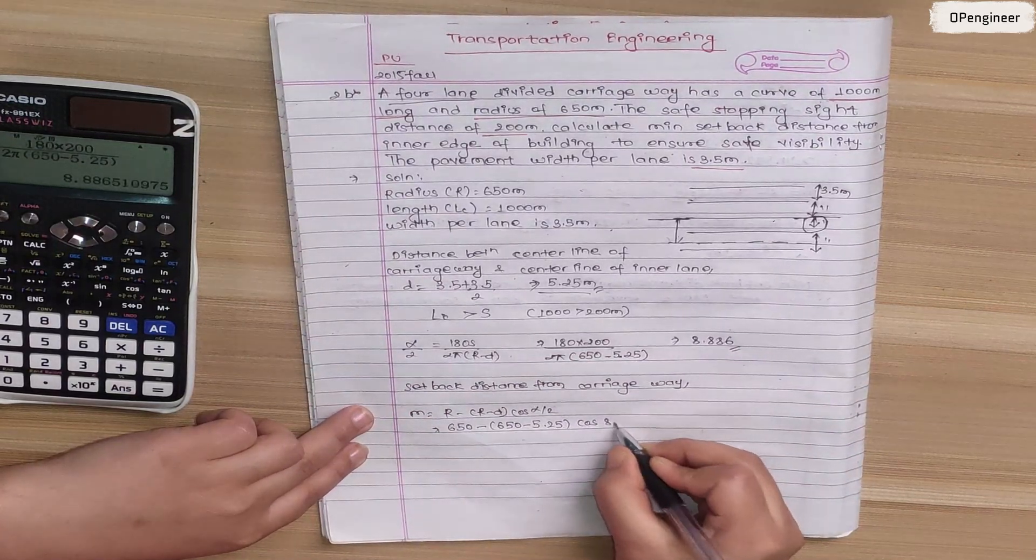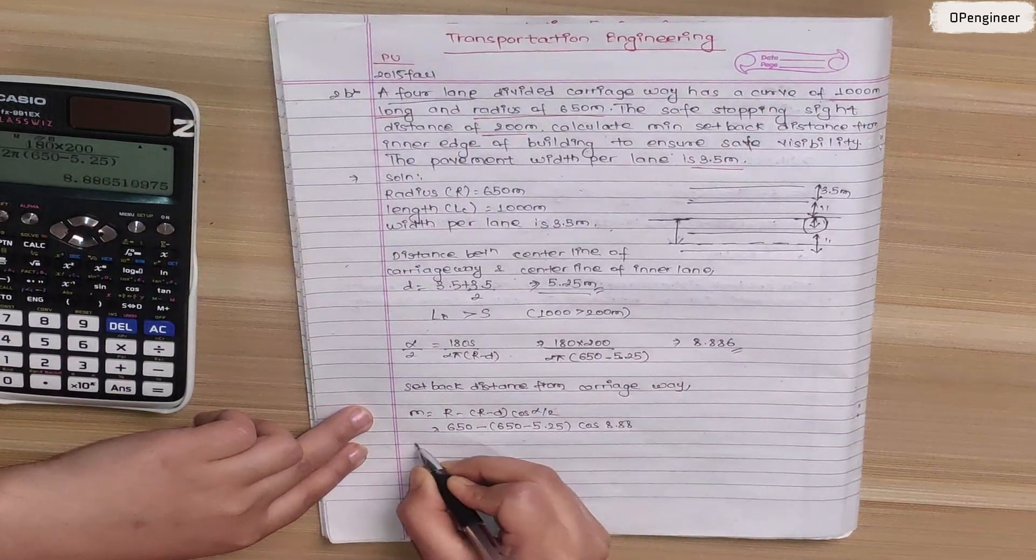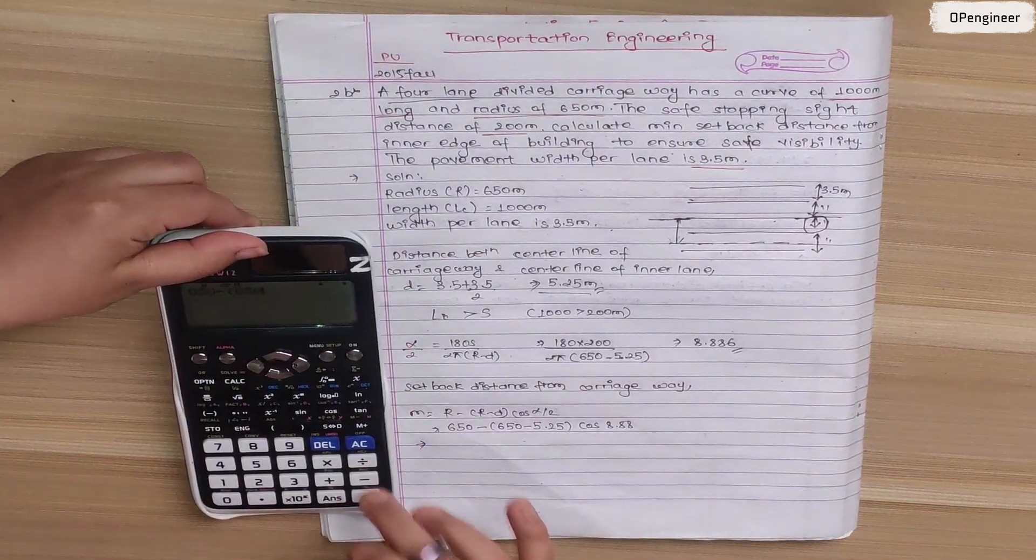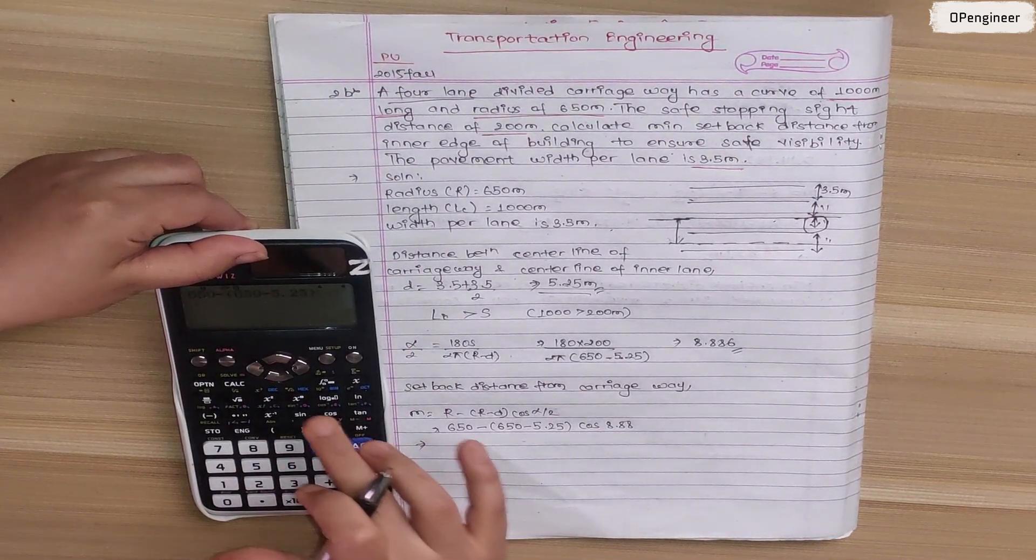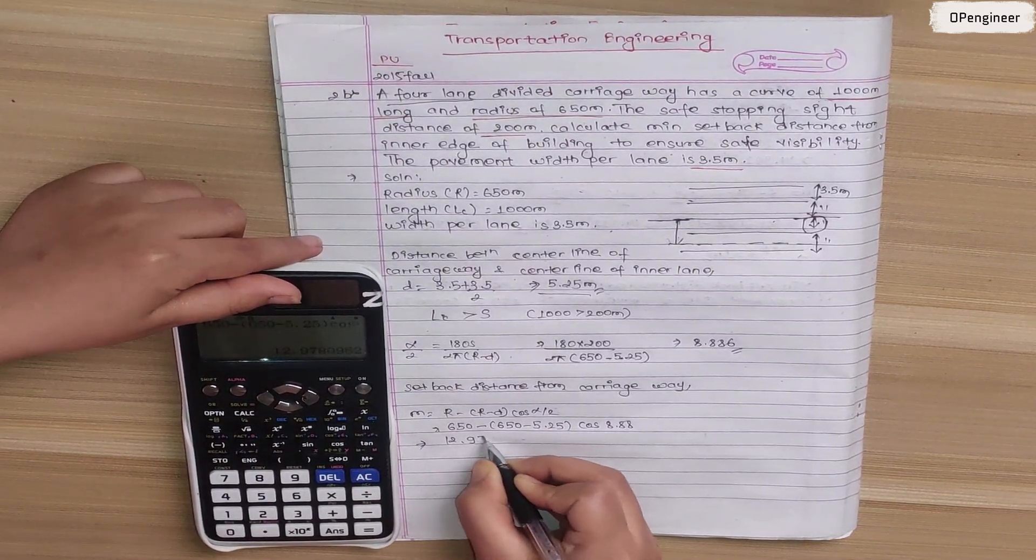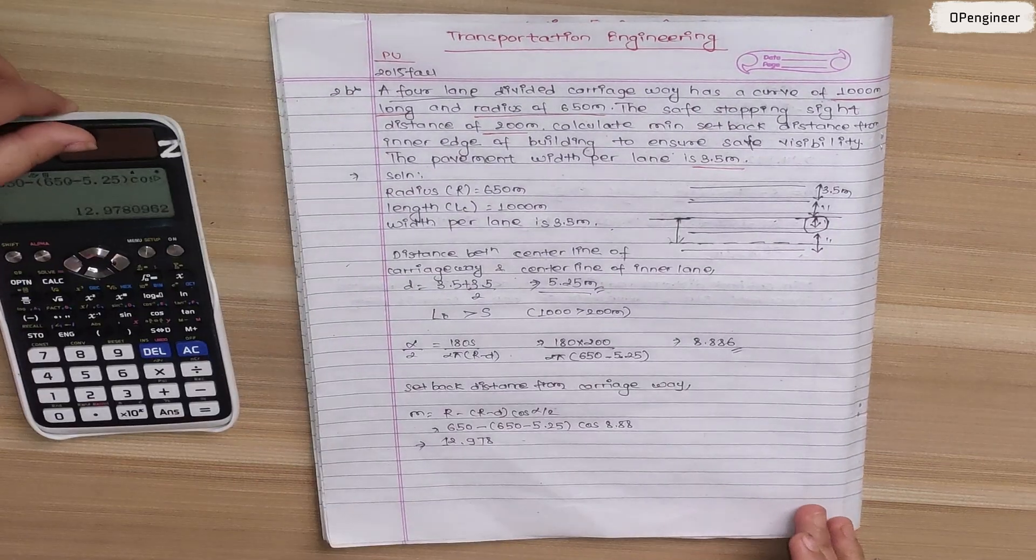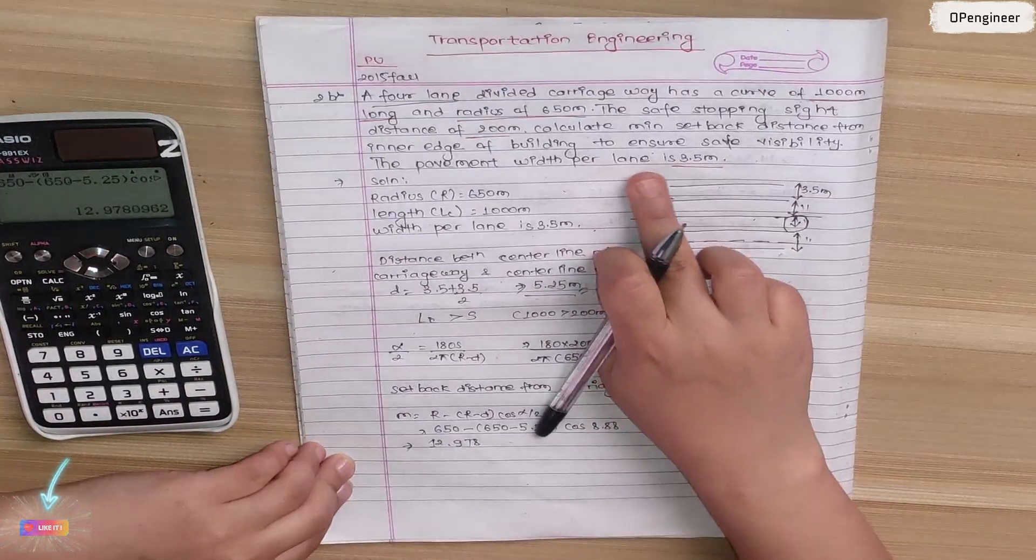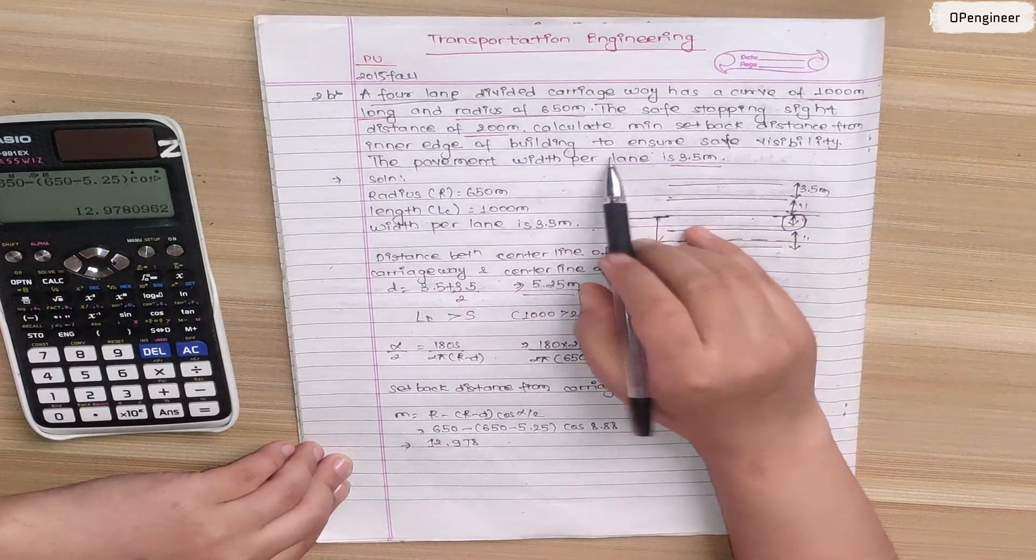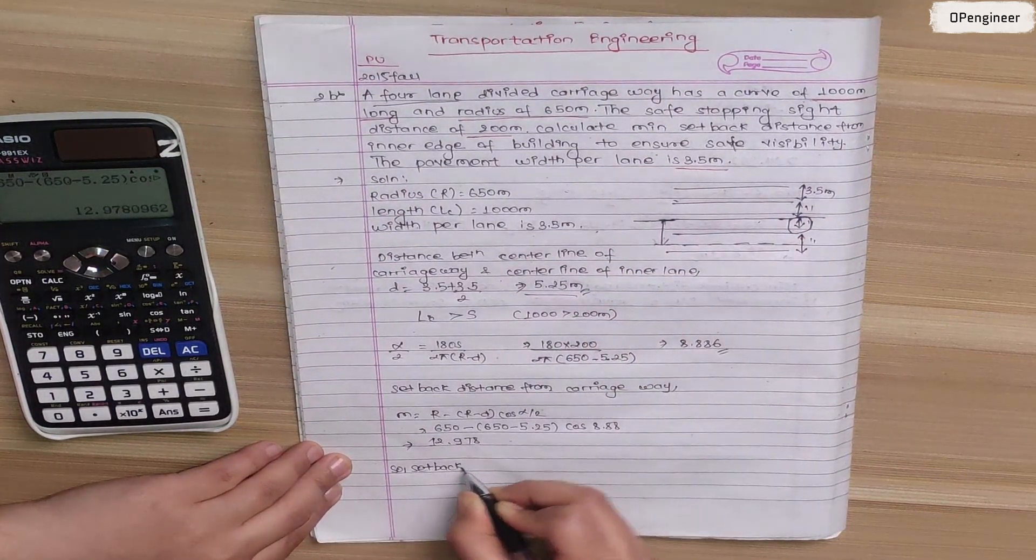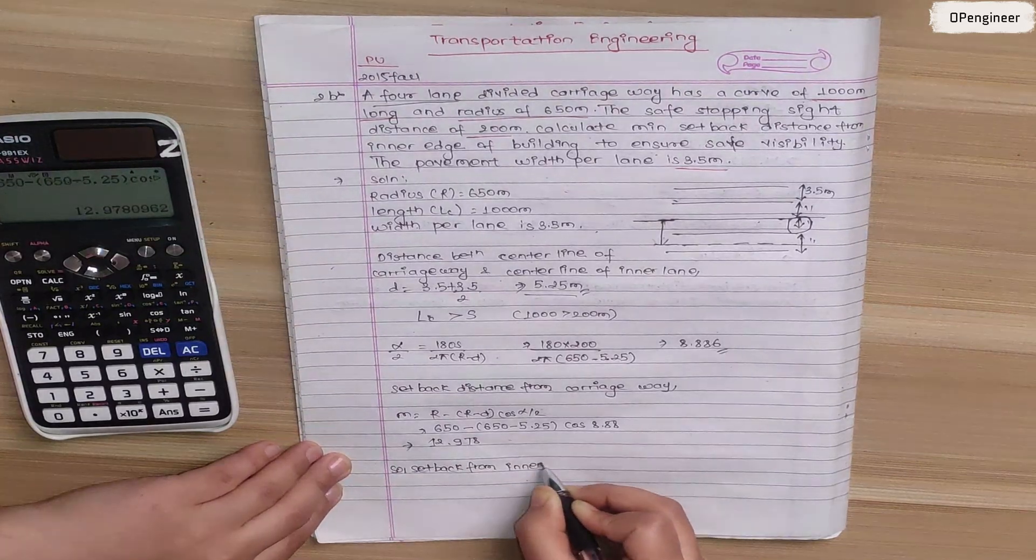Cos alpha by 2, we calculated 8.886. So 650 minus (650 minus 5.25) cos 8.886, which is 12.978. This is the setback distance from the carriageway to ensure visibility.